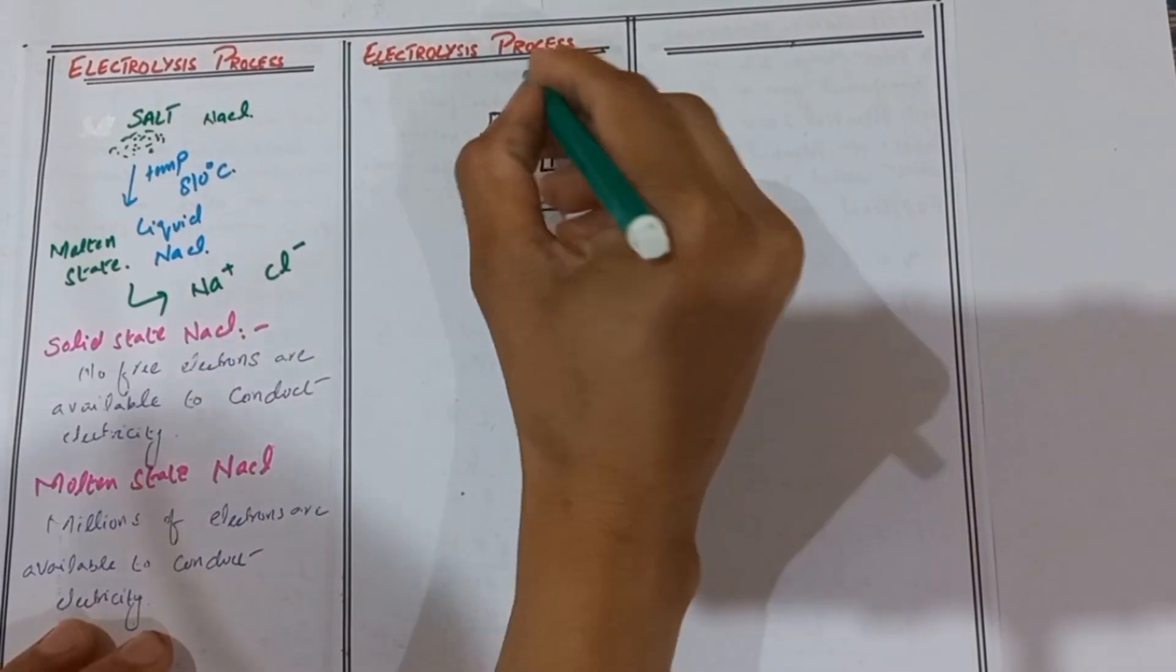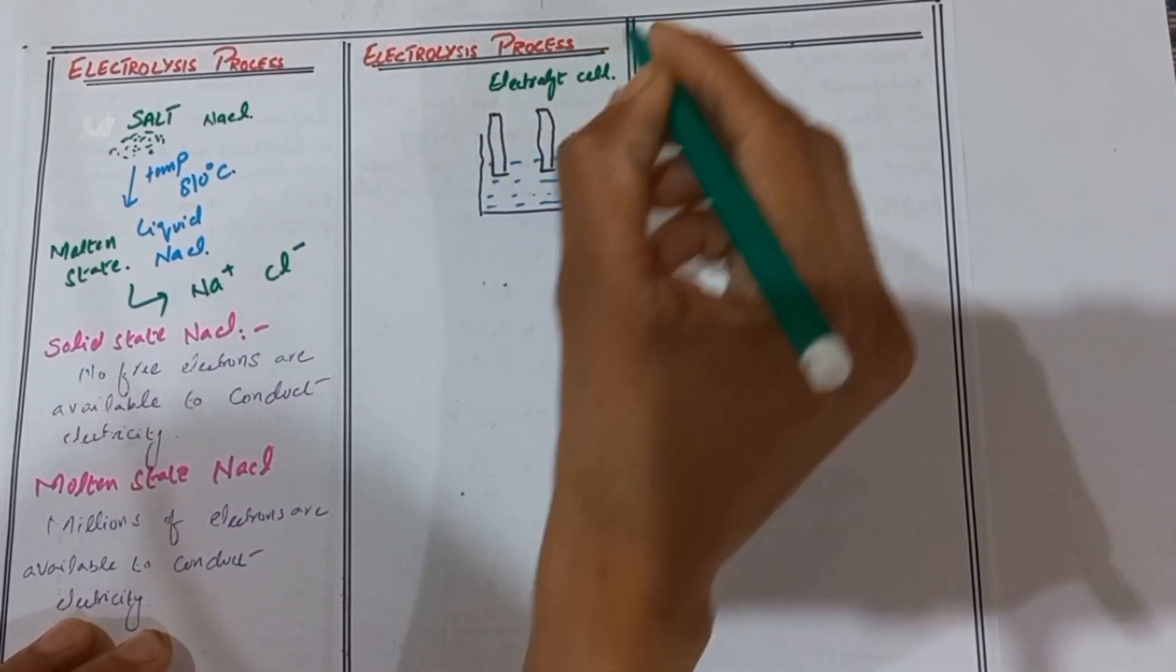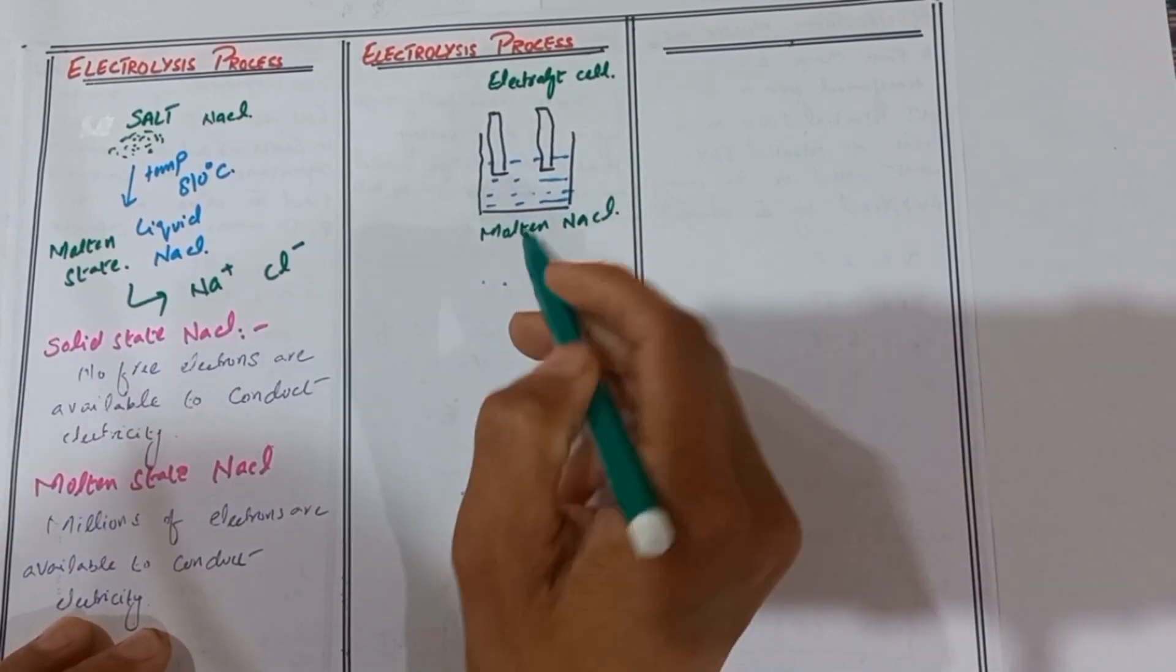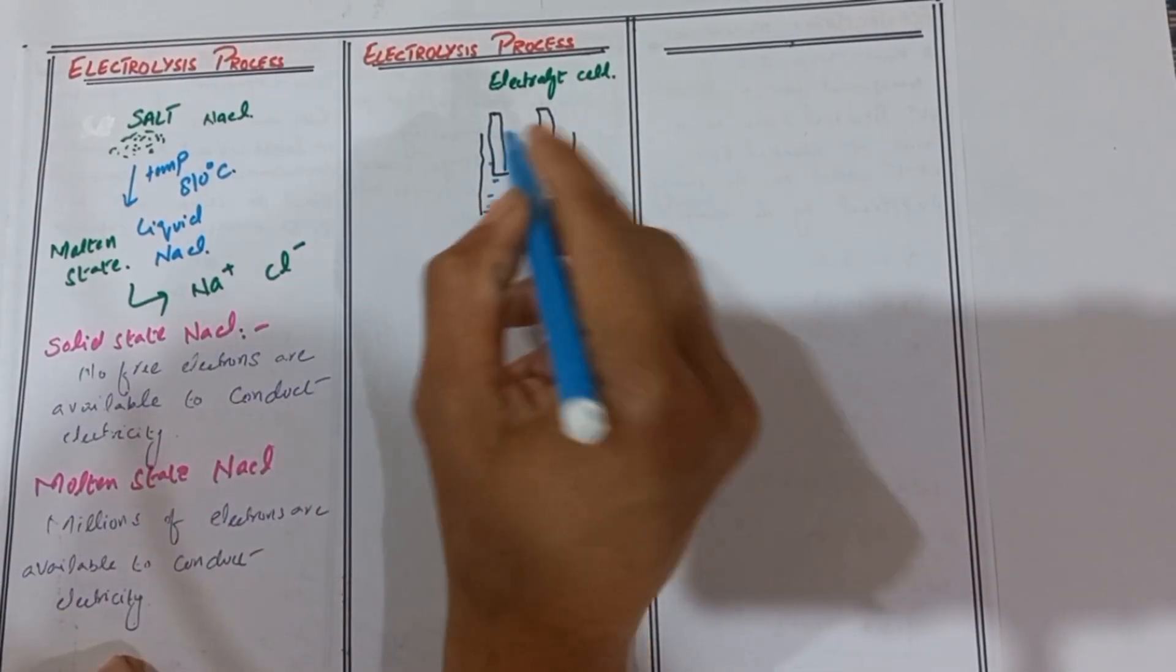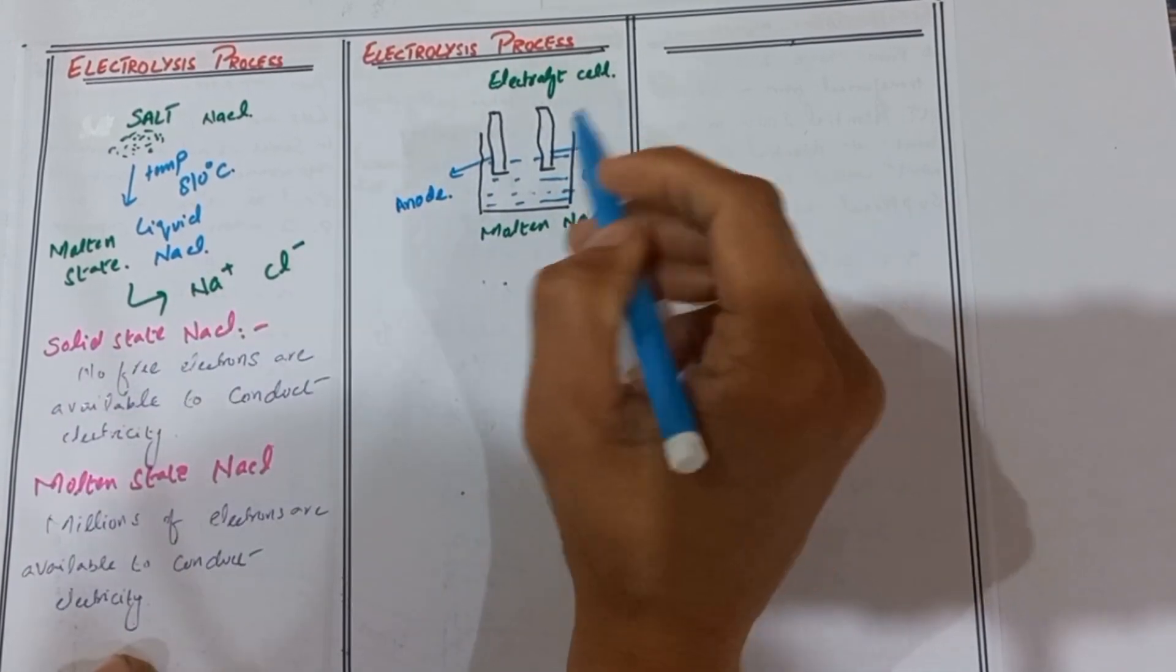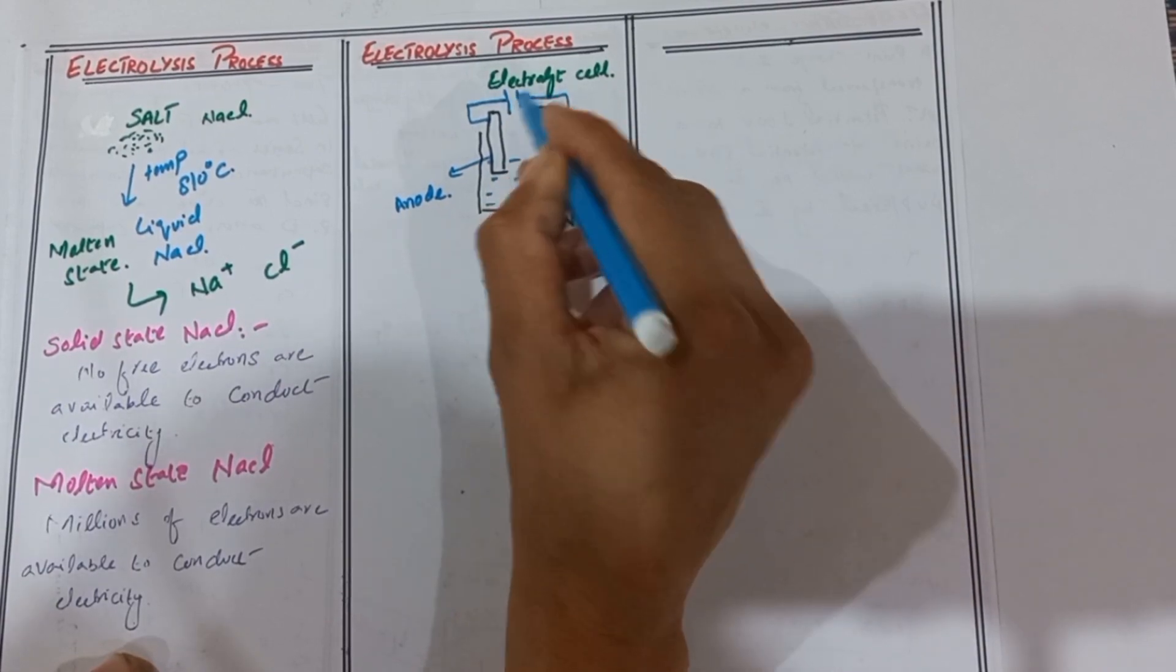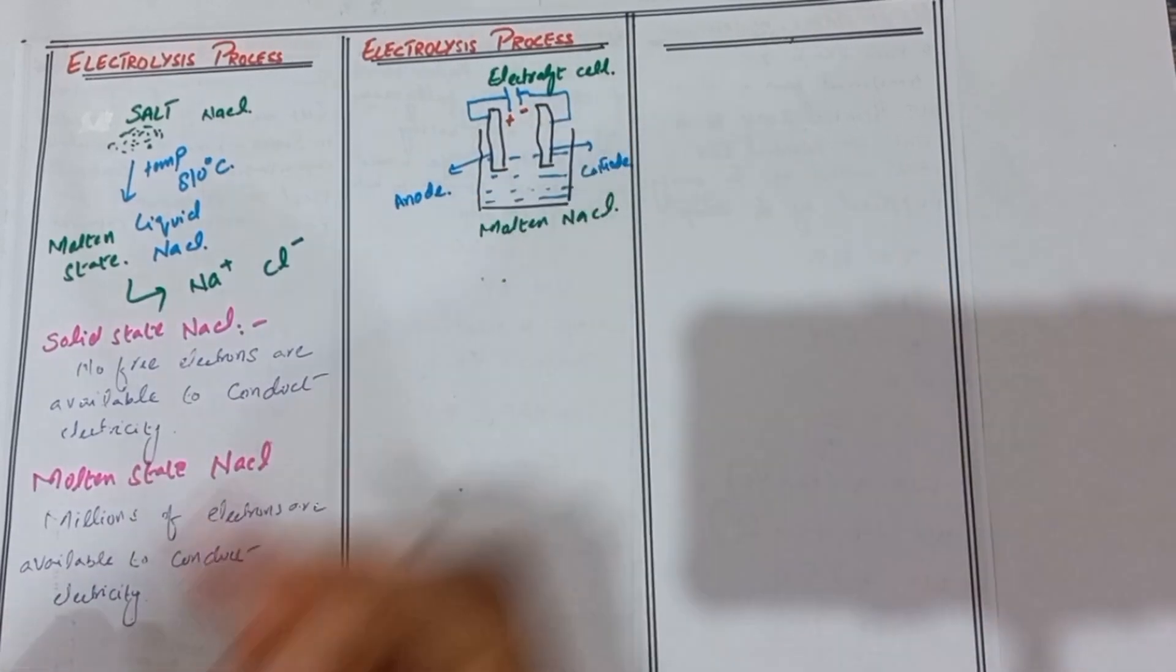Now we consider an electrolyte cell. We place the molten sodium chloride in this electrolyte cell. The cell contains two electrodes: one is the anode and the other is the cathode. The anode is connected to the positive terminal of the battery and the cathode is connected to the negative terminal of the battery.